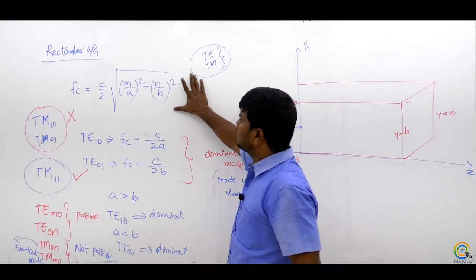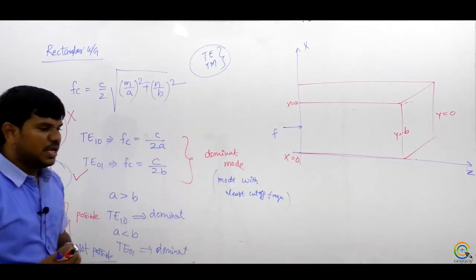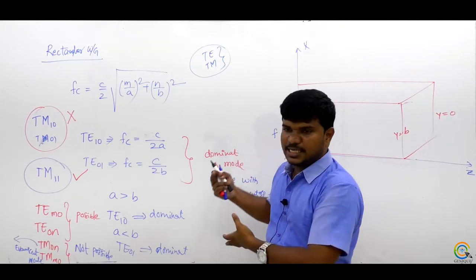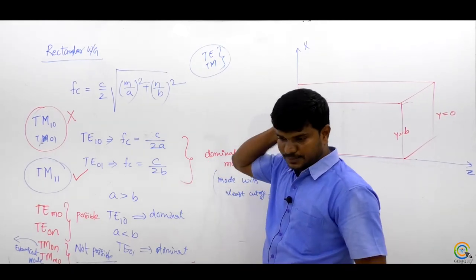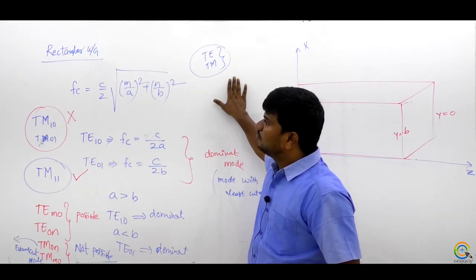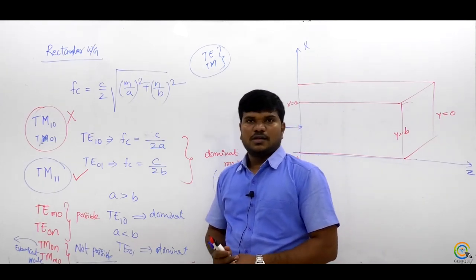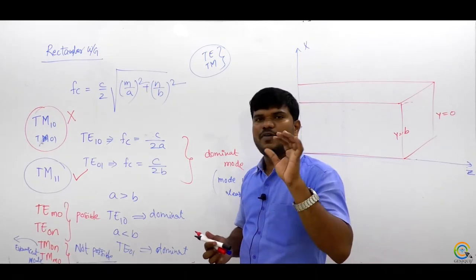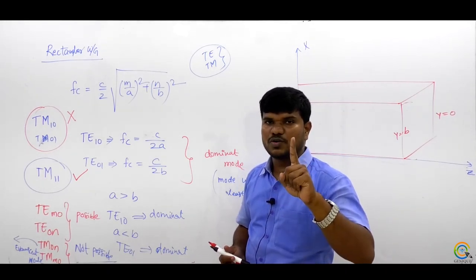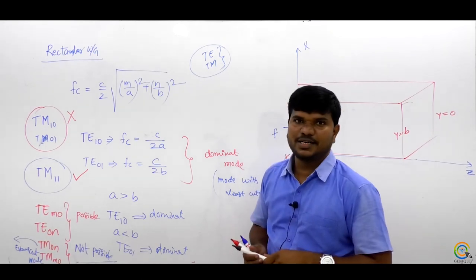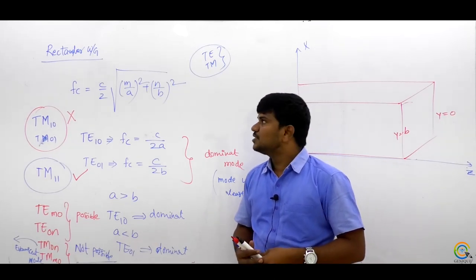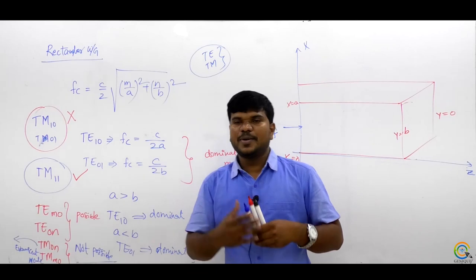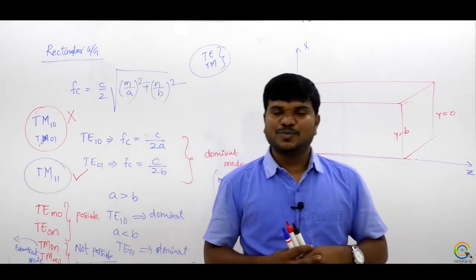For the rectangular waveguide, the phase velocity, group velocity, wavelength, and intrinsic impedance formulas are the same as for the parallel plane waveguide. In gate examinations, they will definitely ask at least two questions on waveguides — focus on the cutoff frequency expression and dominant modes. Thank you very much. Welcome to Janik.